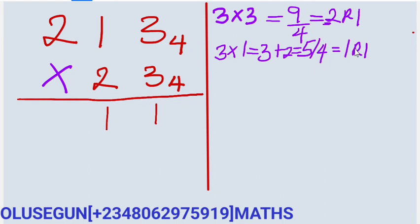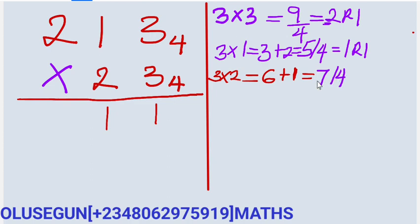You are going to add the remainder, and the number of times it goes, you add the 1 carry. So 3 times 2 is equal to 6. You add 1 to 6, giving us 7. And 7 is greater than 4, so you are going to divide. It goes in 1, remainder 3. You are going to write down the remainder — write 3.